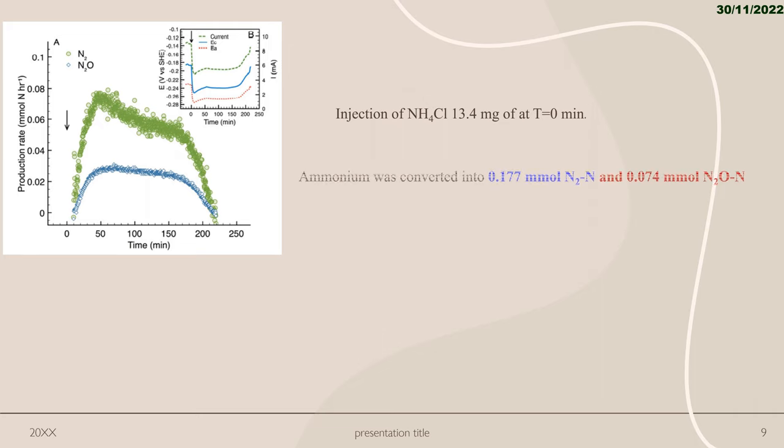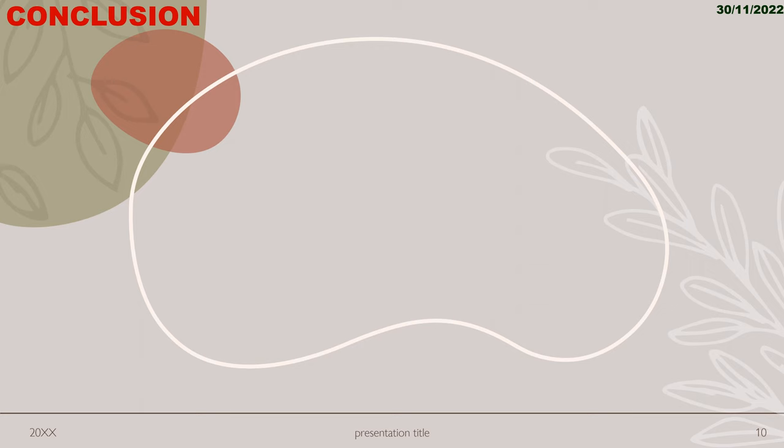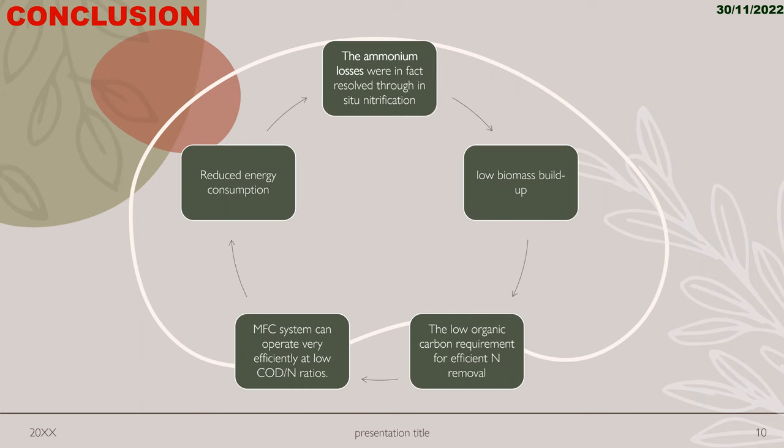In conclusion, first, the ammonium losses were resolved through in situ nitrification. Second, energy consumption reduced. Third, microbial fuel cell system operates efficiently at low COD ratio. Then the low organic carbon requirement for efficient nitrogen removal. Finally, low biomass buildup.